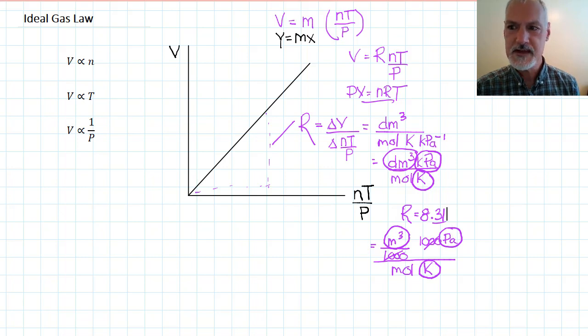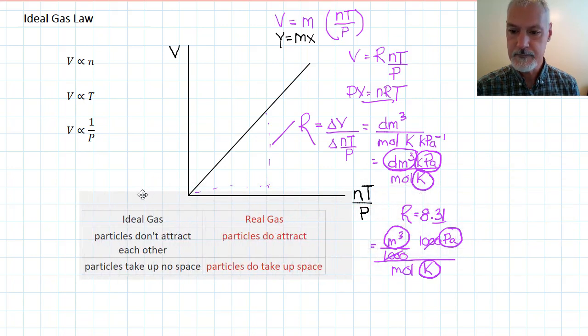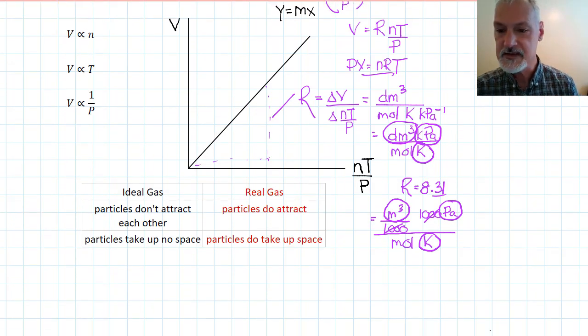Now, why is it called the ideal gas law? The word ideal gas law comes from the idea that gases, so long as we consider the gas particles to be extremely small and not taking up any space, and so long as the particles don't attract each other, they will generate the straight line that we see here.